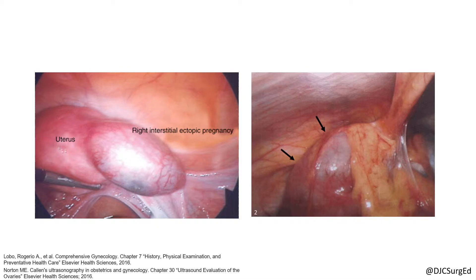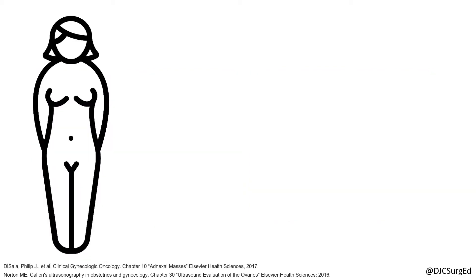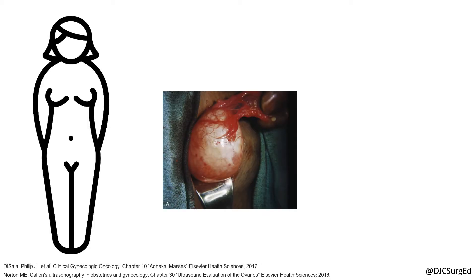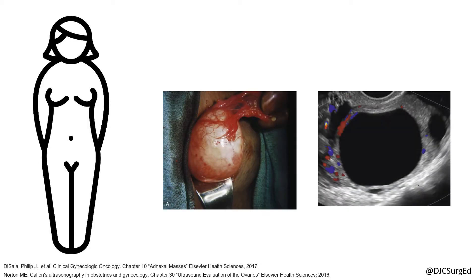menopause status, and features of the mass. Most adnexal masses in premenopausal women are associated with reproductive hormones, such as follicular or physiologic cysts. Simple cysts and low-risk lesions are usually thin-walled, anechoic, unilocular, and small in size.